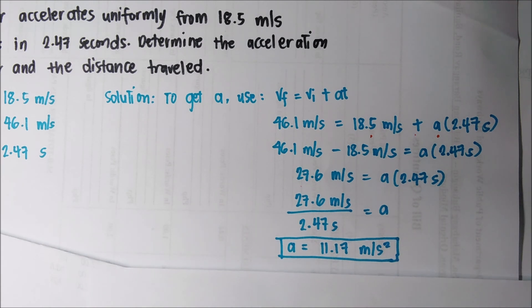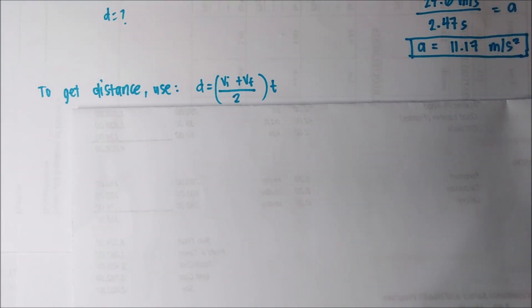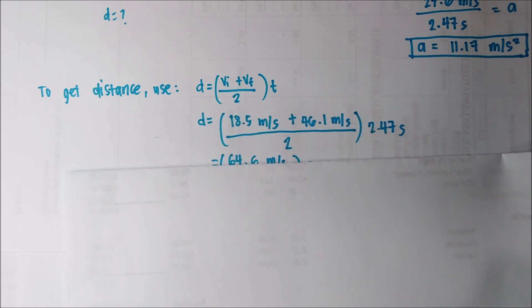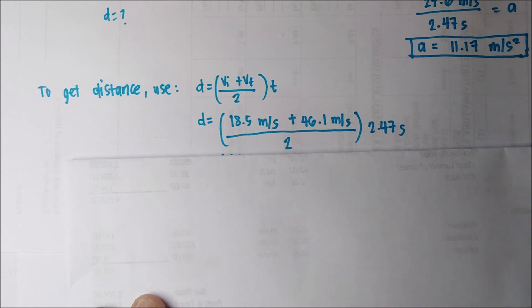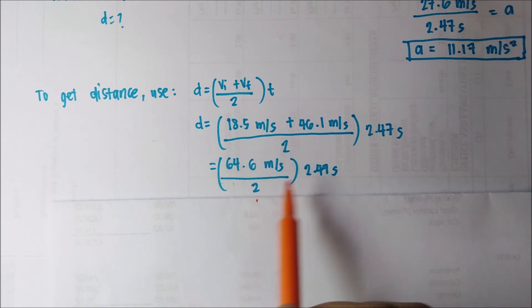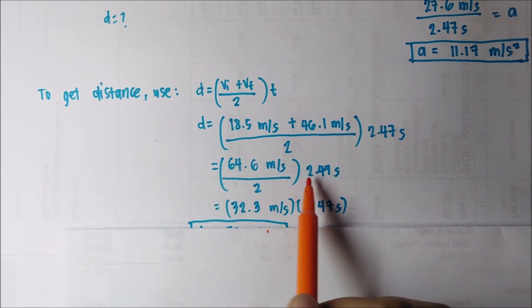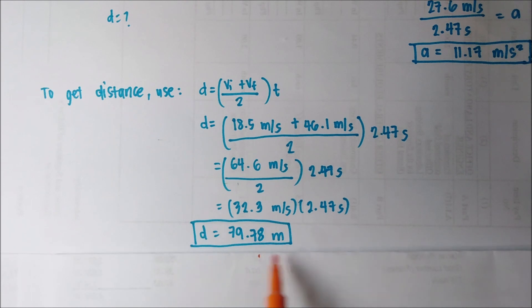To find the distance, we use the formula: distance equals the sum of the velocities divided by 2, multiplied by time. Substituting: 18.5 plus 46.1 meters per second equals 64.6. Divided by 2 gives 32.3 meters per second, multiplied by 2.47 seconds. So the distance is 79.78 meters.